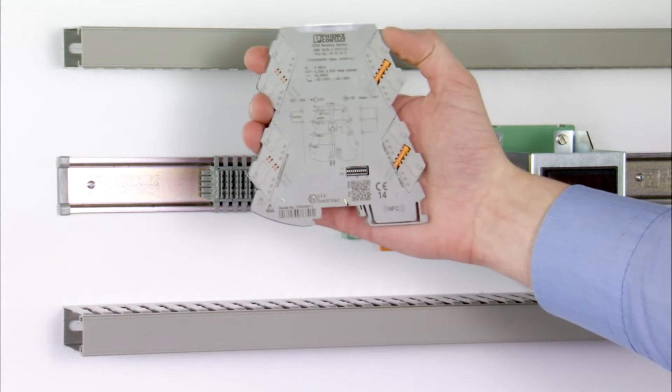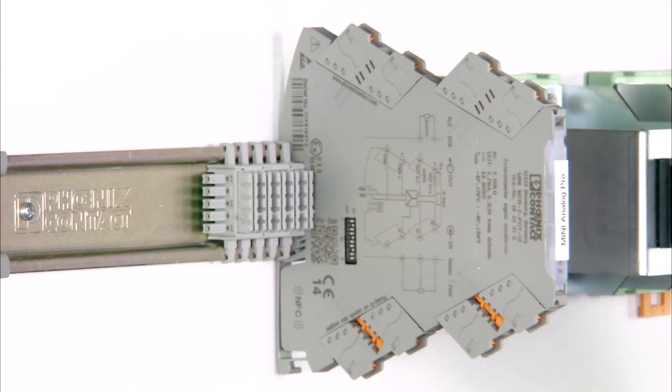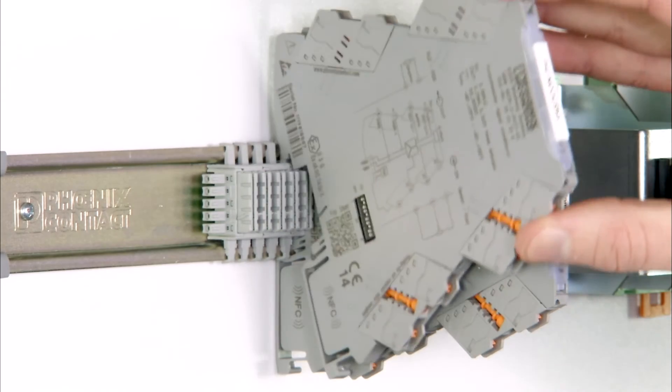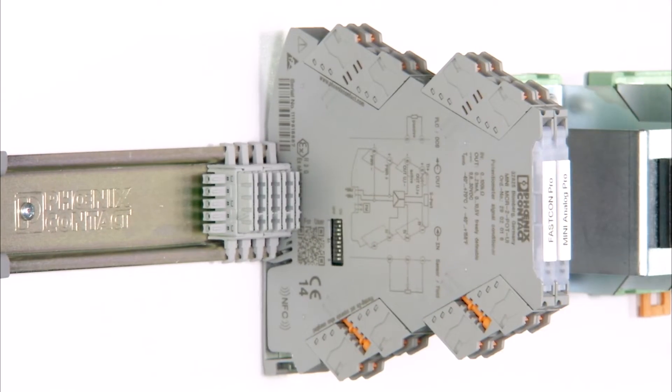The compact design with a width of only 6.2 mm achieves space savings in the control cabinet of up to 65%.